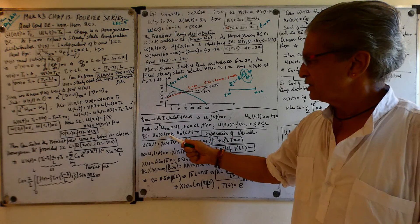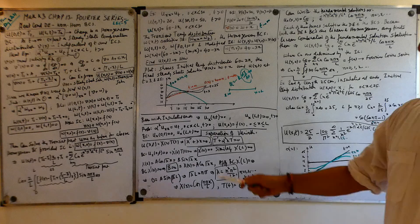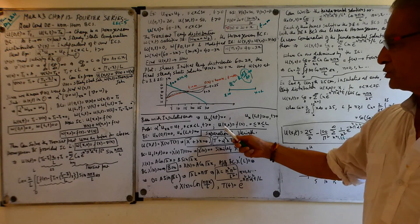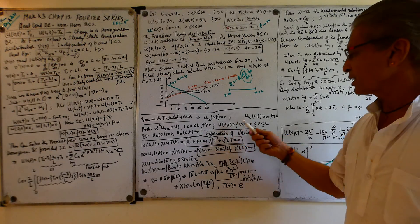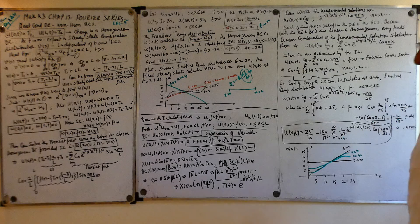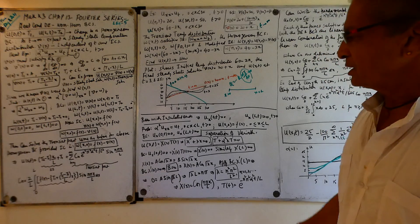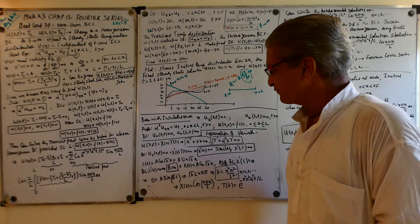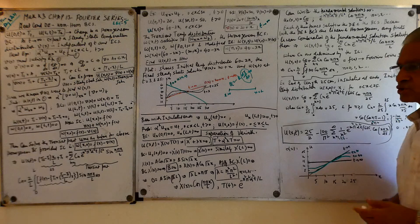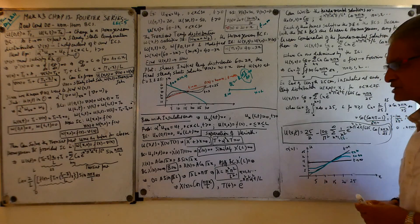The problem is: α²u_xx = u_t, for x from 0 to L, t > 0, with initial condition u(x,0) = F(x), and boundary conditions u_x(0,t) = 0 and u_x(L,t) = 0. We use separation of variables: u(x,t) = X(x)·T(t), which gives X'' + λX = 0 and T' + α²λT = 0.